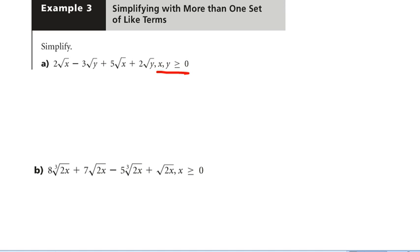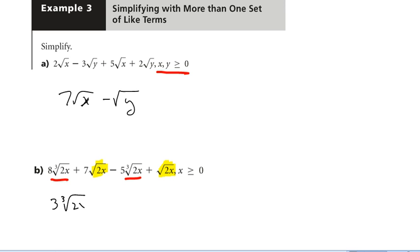They've already done our restrictions for us, so we just need to collect like terms. We've got 2 root x and 5 root x is 7 root x. Negative 3 root y plus 2 root y is going to be minus root y. Done. Notice on this one, our like terms are going to be cubed root of 2x and square root of 2x. Because they're different roots, they're different sets of like terms. So I've got 8 minus 5 is 3 cubed root of 2x, and 7 plus 1 plus 8 is 16 square root of 2x. Done.